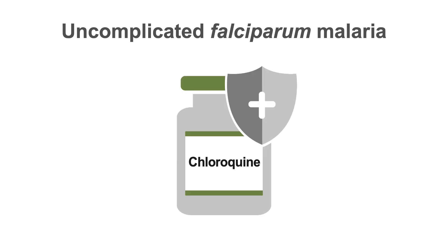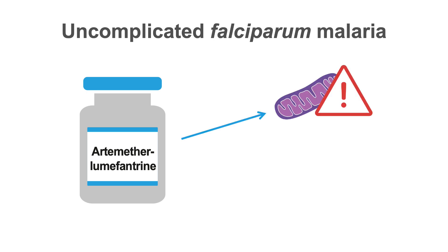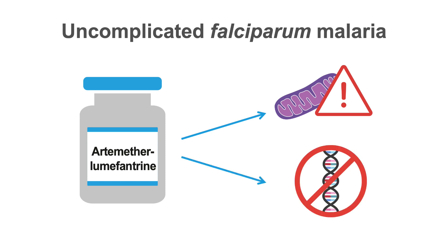For uncomplicated Plasmodium falciparum infections acquired in areas with chloroquine resistance, four treatment options are available. Artemether-lumefantrine is the preferred option if readily available. Artemether is related to artesunate, which works by disrupting the mitochondrial membrane and the energy production of the mitochondrion, causing the parasite to die. Lumefantrine's precise mechanism of action is unknown, but available data suggests that it inhibits nucleic acid and protein synthesis.